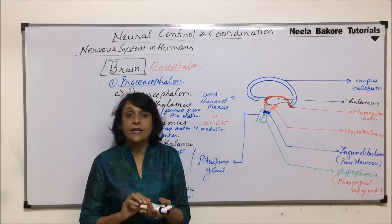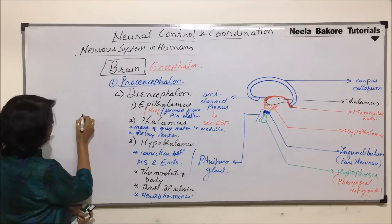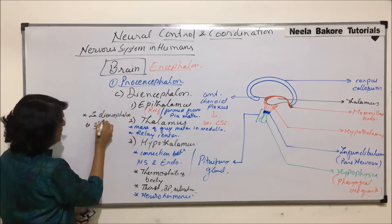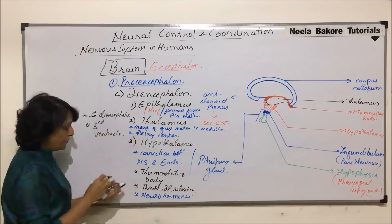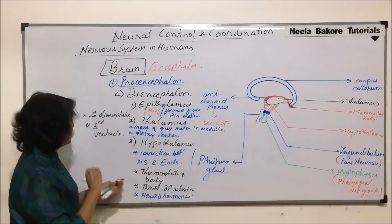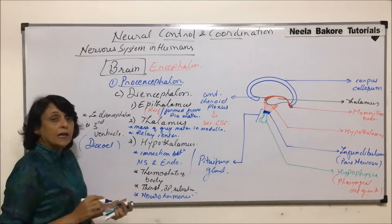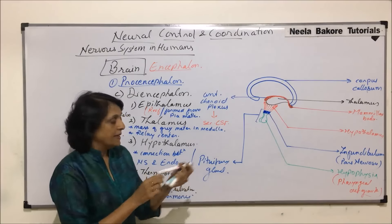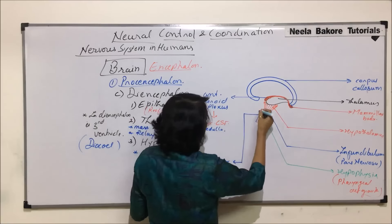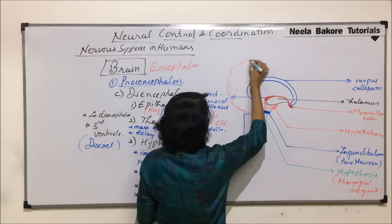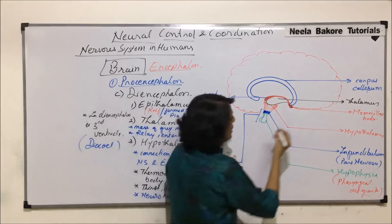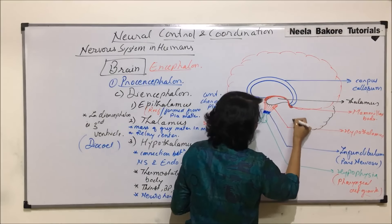Hypothalamus also secretes neurohormones, and that is how it acts as a connection. Inside diencephalon is present the third ventricle. The first and second ventricles were present in the cerebral hemispheres. The third ventricle is present in diencephalon and is known as diocele. Now let us draw the other parts — the cerebral hemispheres and cerebellum, which is part of the hindbrain.